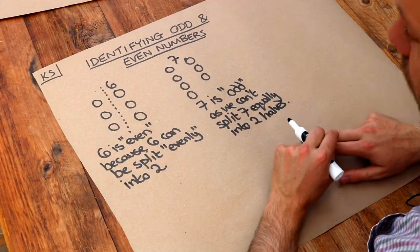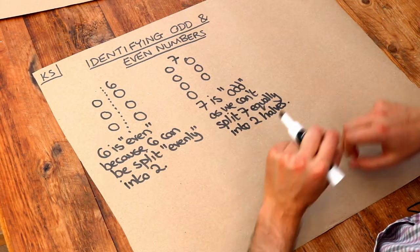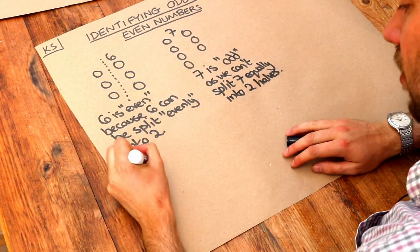As we can't split seven equally or evenly into two halves. Now let's think of single digit numbers where we can split it into two.